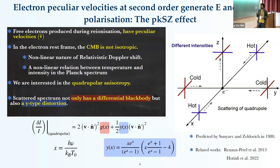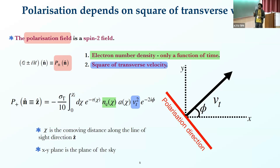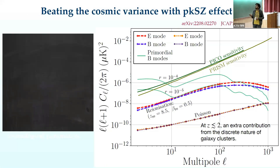These are a few previous works related to this. The polarization field is a spin-2 field, characterized by the two Stokes parameters U and Q, given by this equation. It is proportional to the electron number density and to the square of the transverse velocity of the electrons. If our line-of-sight direction is the z-direction, the xy-plane is the plane of the sky, and one can show that the polarization direction will always be perpendicular to the transverse velocity direction.